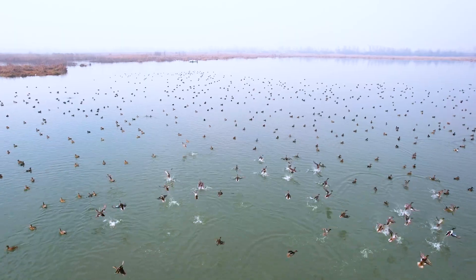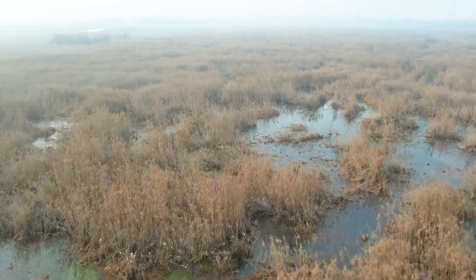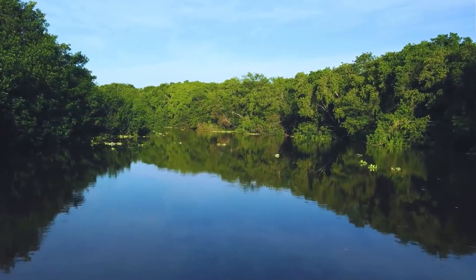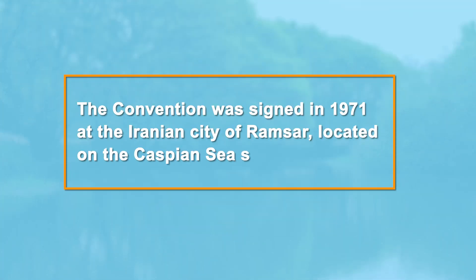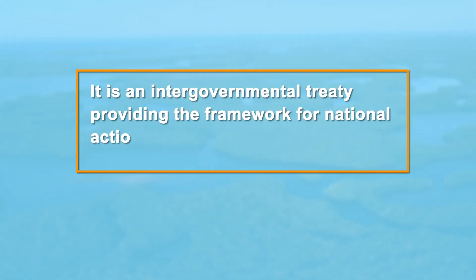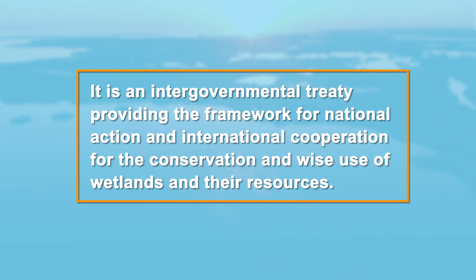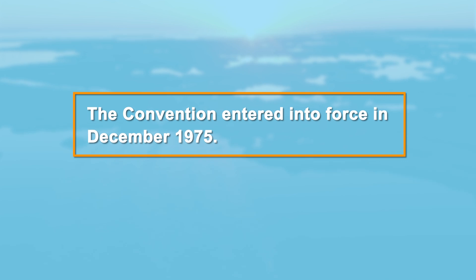Wetlands are the only ecosystem to have a dedicated multilateral environmental agreement of their own, known as the Ramsar Convention. The convention was signed in 1971 at the Iranian city of Ramsar, located on the Caspian Sea shore. It is an intergovernmental treaty providing the framework for national action and international cooperation for the conservation and wise use of wetlands and their resources. The convention entered into force in December 1975.